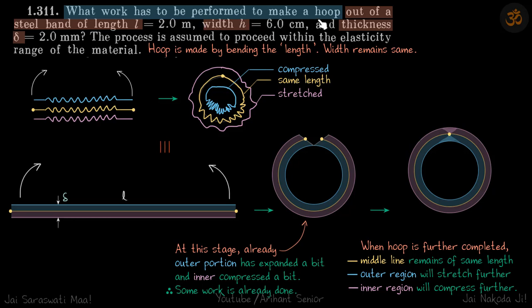So we have to bend a sheet to make a hoop. So let's take an analogy first. So we have let's say three springs and we have to fold to make a hoop out of these three springs.